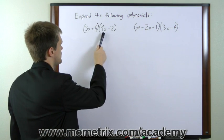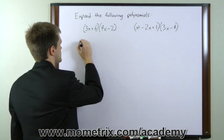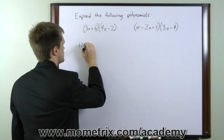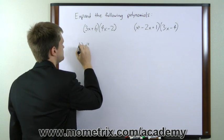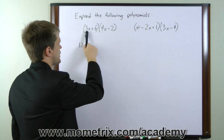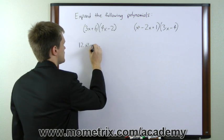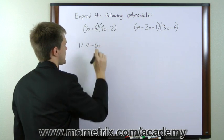First pair is going to be 3x times 4x, which gives us 12x squared. The outside pair is 3x times negative 2, which gives us minus 6x.